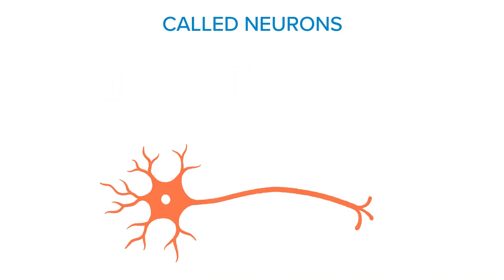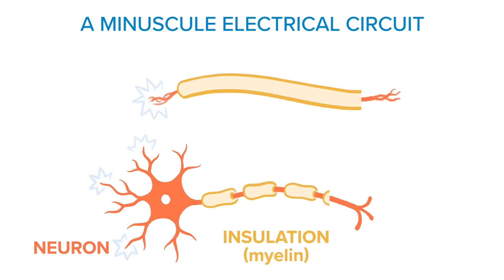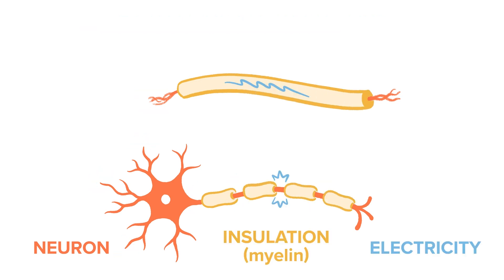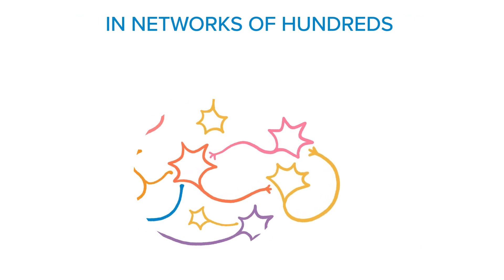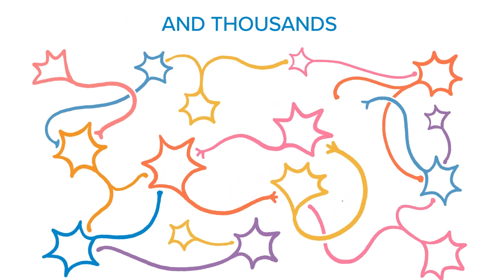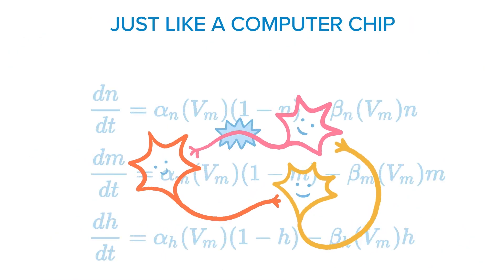Brains contain cells called neurons. Each neuron works like a minuscule electrical circuit. These cells can come together in networks of hundreds and thousands, allowing them to perform complex operations just like a computer chip.